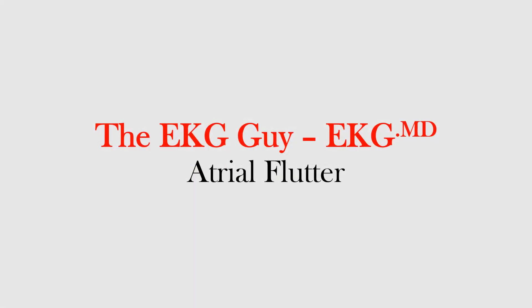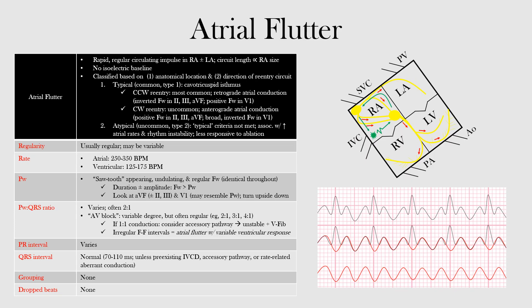In this lecture we will discuss atrial flutter including its mechanism, EKG features, and how it is classified. Atrial flutter is a form of re-entrant atrial tachycardia characterized by rapid regular undulation on the EKG. It is a type of supraventricular tachycardia, meaning it originates above the ventricles, and it is caused by a re-entry circuit within the right atrium.